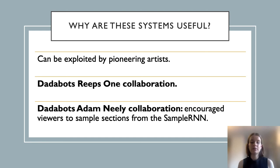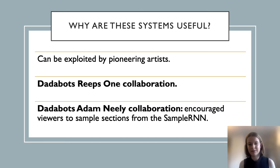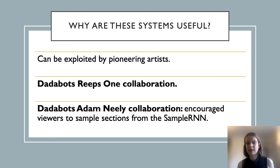It's super important to talk about why these systems are actually useful. Dadabots are very vocal about the fact that their SampleRNN can be exploited by pioneering artists. They did a collaboration with UK beatboxer Reeps One, where he did a duet with his AI self, which was really fun and engaging to listen to. Dadabots also did a collaboration with music theory YouTuber Adam Neely, where they generated an infinite bass solo based on Neely's playing. Significantly, Neely encouraged viewers to sample sections from what the SampleRNN had generated to create their own tracks, showing that raw audio neural networks can be an effective creative tool for human composition. More generally, combinatorial and transformational creativity in machines may help us to develop other artists' and even other machines' material in ways we cannot predict, due to our preconceived expectations or other machines' limitations.